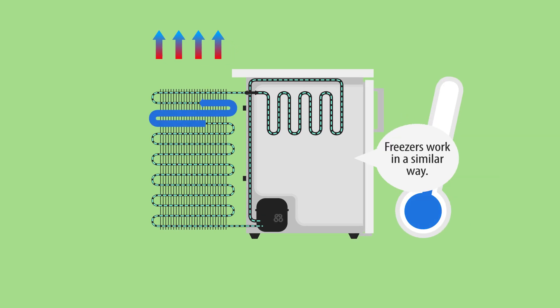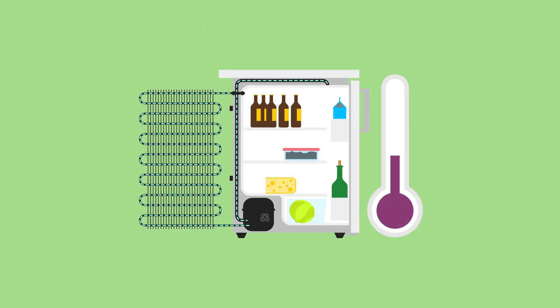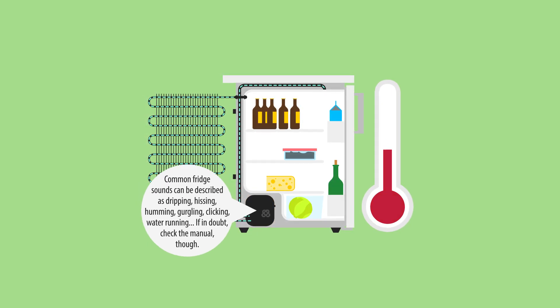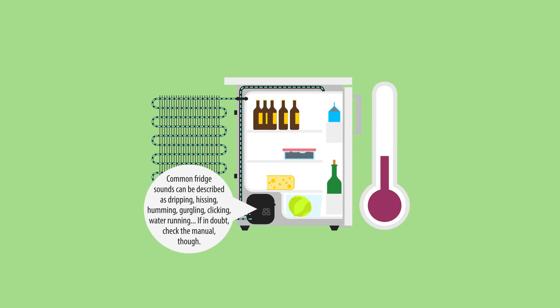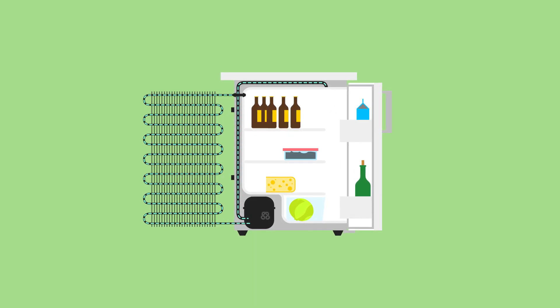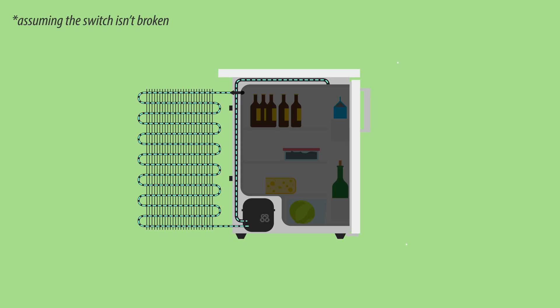And so, the cycle repeats. A thermometer inside the fridge measures the temperature, and turns on the compressor when the temperature gets too high. This is what you hear when the fridge turns on. And yes, the light truly turns off when you close the door.